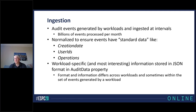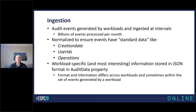Three standard fields exist in every audit event: creation date — the timestamp for when an event occurred; user ID — the UPN of the user who created or is associated with the event; and operations — what they did, for example if they modified a file, it would be a file modified operation. What's really critical to understand is that after these normalized standard fields, you're going to have workload-specific data. The most interesting information — which actually tells you what happened — is stored in a JSON format in a property called audit data.